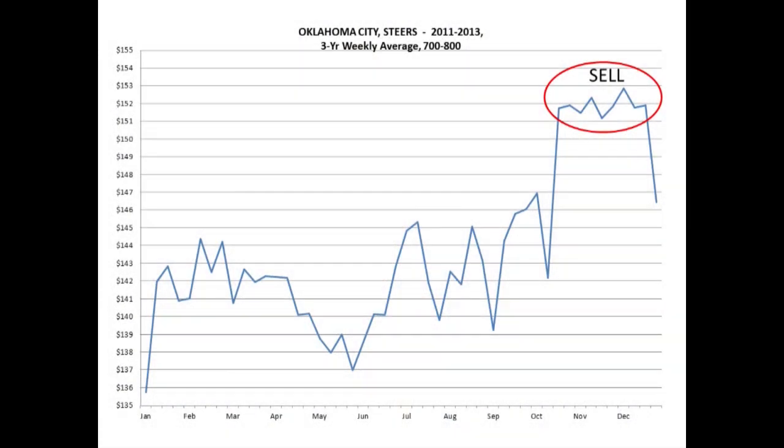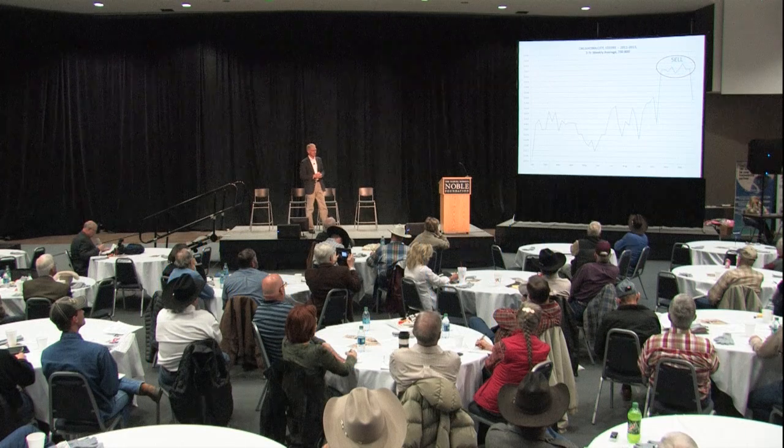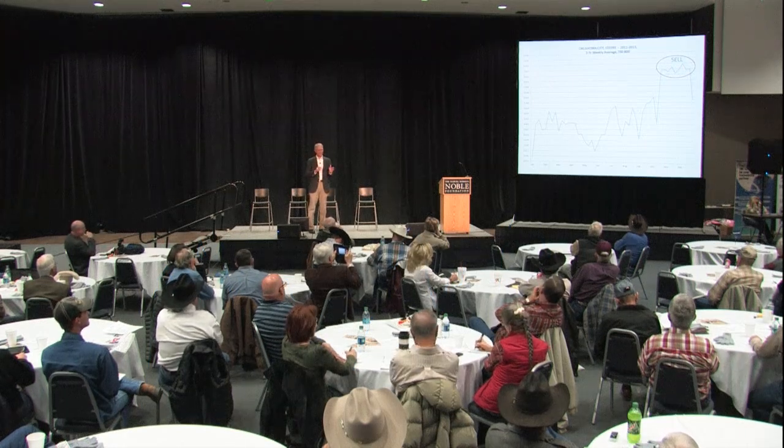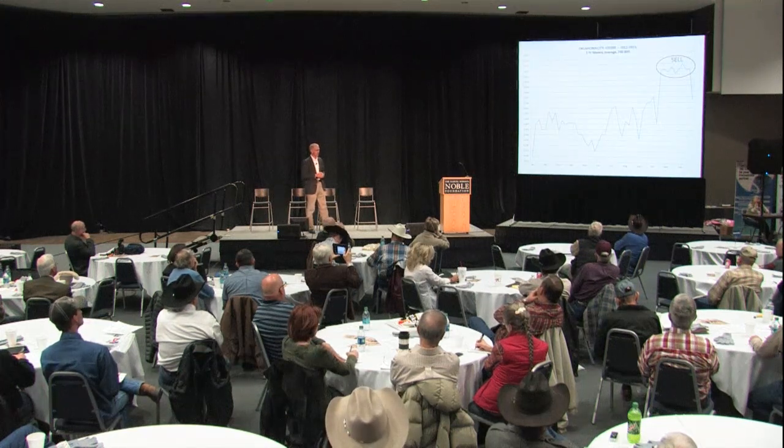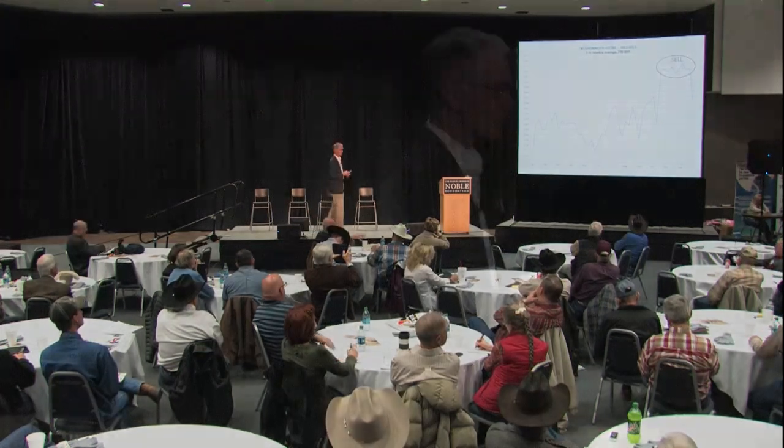If you look at seven-to-eight-weight cattle, here's the seasonality: the best time to sell during the year is late — October, November, December. Every class has a little bit different seasonal price pattern. By studying these patterns, we can take advantage of opportunities in the seasonality of different classes of cattle.